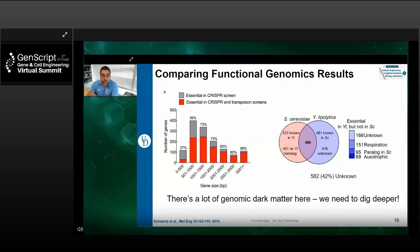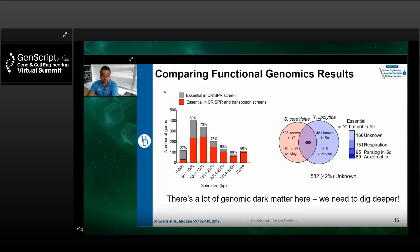This approach is particularly useful for smaller genes that are statistically harder to access via transposon screens. Comparing known essential genes from Y. lipolytica to those from Saccharomyces cerevisiae, we find a large number of genes uniquely essential to Y. lipolytica. However, almost half of those genes have unknown functions — what I call genomic dark matter — that we need to further investigate to understand the full capacity of this cell and really all cells we work with.